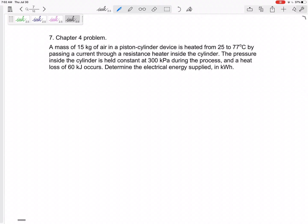Alright, chapter four were closed systems, where we did have a change in energy. So look at this: a mass of 15 kilograms of air in a piston-cylinder device is heated from 25 to 77 degrees Celsius by passing current through a resistance heater inside the cylinder. The pressure inside the cylinder is held constant at 300 kPa during the process. Heat loss occurs from the electrical energy supply.